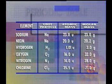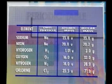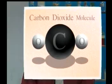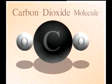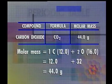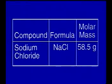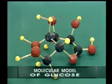Look at these examples. For compounds, we obtain molar mass by adding the masses of their constituent atoms. The molar mass of carbon dioxide is 44.0 grams. The molar mass of sodium chloride is 58.5 grams. Glucose, 180 grams.